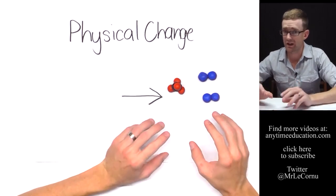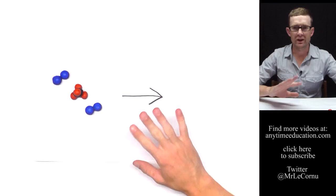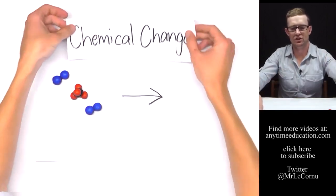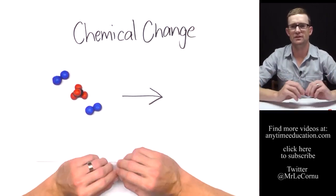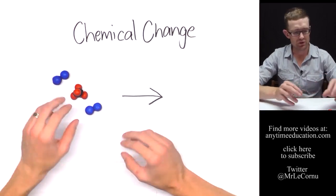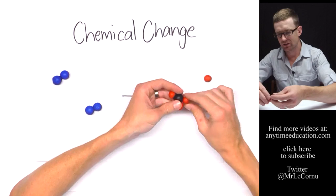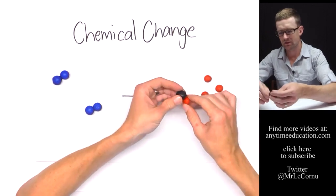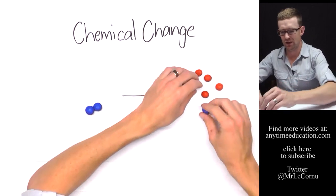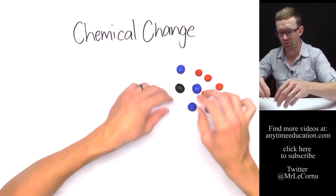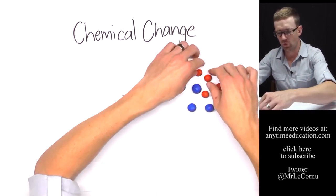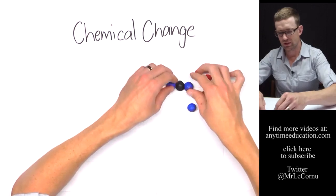But in a chemical change, new substances are made, which means the atoms have actually been rearranged. So let's pull these apart—this is what happens in a chemical change. The atoms get rearranged and we form new substances.